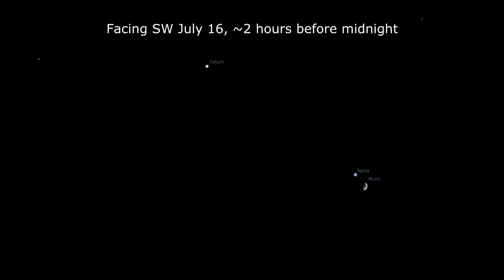The moon is at first quarter on the 16th, and that evening it skims very close by to the bright star Spica. The following evening, look for the moon near the planet Saturn.